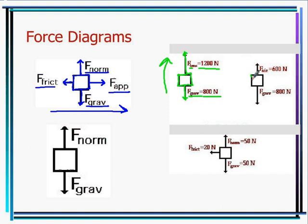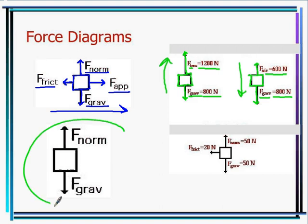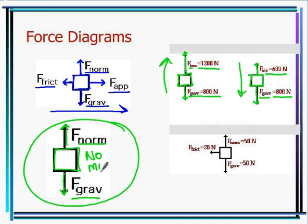Next example: draw a short arrow going up for force equals 600 Newtons, and a longer arrow going down for force of gravity equals 800 Newtons. Since 800 is greater than 600, the object moves downward — it falls. Then draw a square where force normal and force of gravity arrows are equal — the object has no motion, neither moving up nor down.